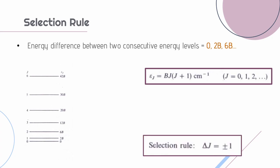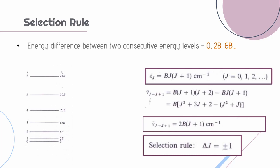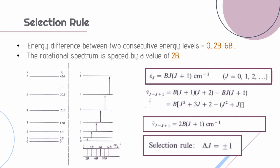We have a selection rule which says that change in the rotational quantum number equals plus or minus 1 for a transition to take place. We find the energy difference between the Jth energy level and J plus 1th energy level which comes out to be 2B times J plus 1 in wave numbers. So each of these transitions have values like 2B, 4B, 6B and so on. In the rotational spectrum we find that the spectral lines are separated by a value of 2B.